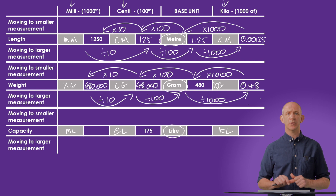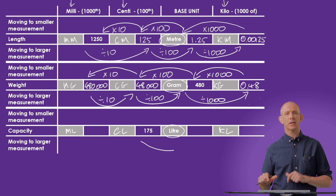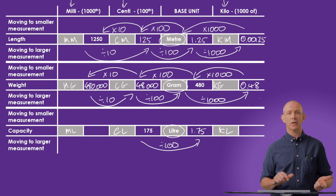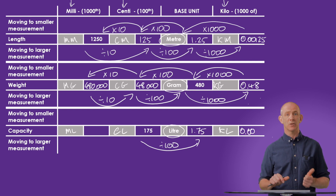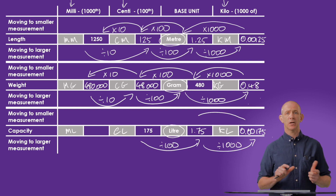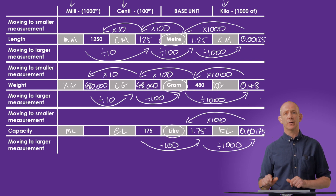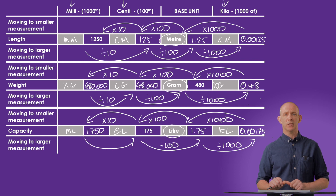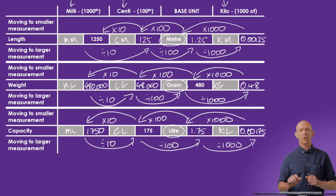For capacity, starting with 175 centiliters, we divide by 100 to get 1.75 liters, then divide by 1000 to get 0.00175 kiloliters. Going back the other way, multiply by 1000 to get 1.75 liters, then multiply by 100 to get 175 centiliters, then multiply by 10 to get 1750 milliliters.